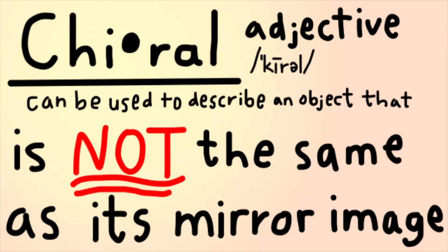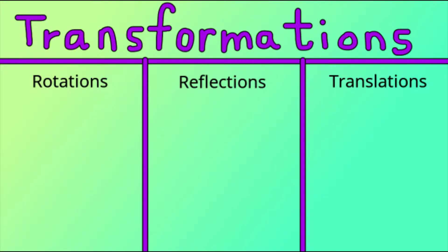Now that we understand that chiral means not the same as its mirror image, let's move on to metachirality. For this, we'll need to know the three types of transformations.